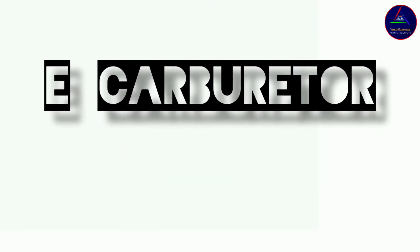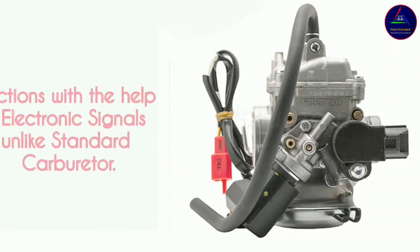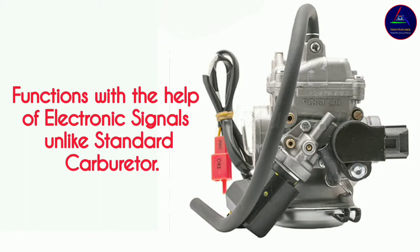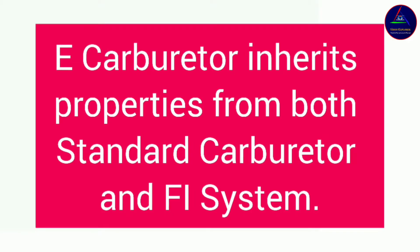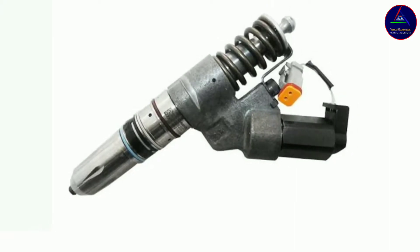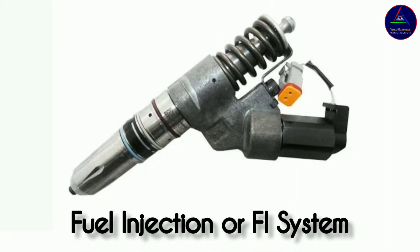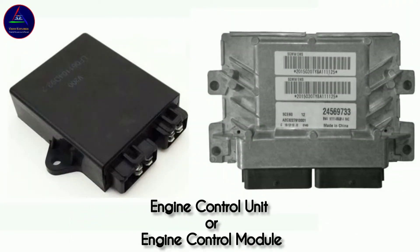As its name suggests, an electronic carburetor is a carburetor that functions with the help of electronic signals. The e-carburetor inherits properties from both the carburetor and the FI system, meaning it is not completely like either a standard carburetor or an FI system. A standard carburetor is a mechanical device which provides the ideal air-fuel mixture for combustion according to the operating condition of an engine — and the same job is done by the FI system, but unlike a standard carburetor, it uses electronic signals to make the mixture more precisely. In the e-carburetor, the ECU, or electronic control unit, controls the mixture of the charge — the air-fuel mixture — which was done mechanically by the standard carburetor.